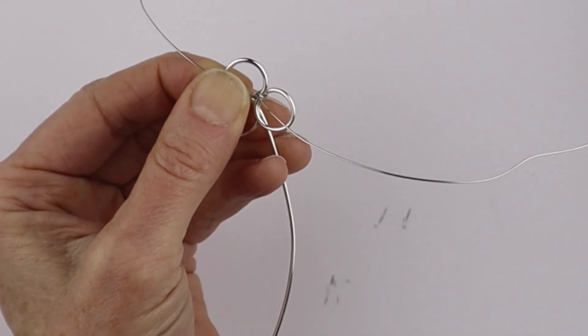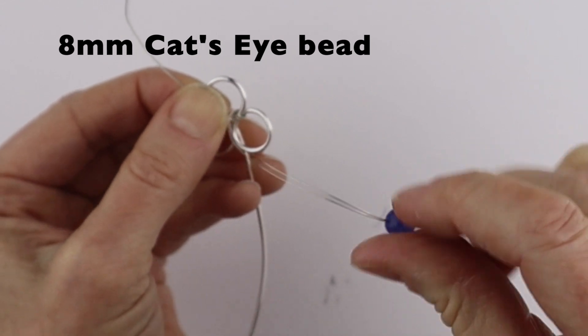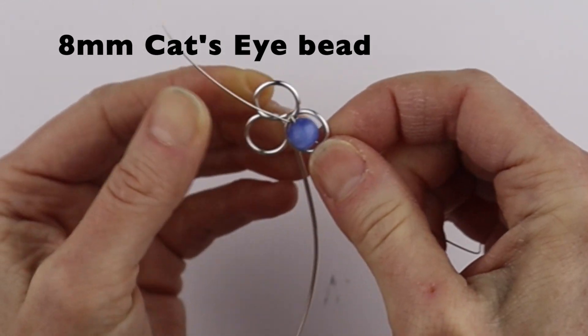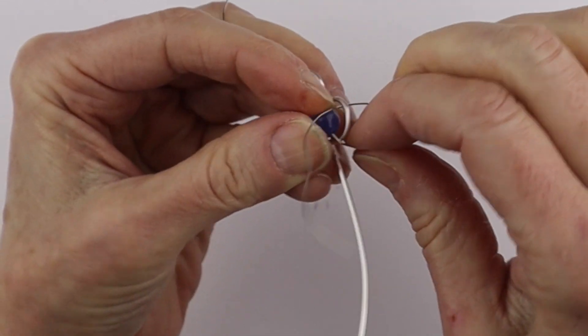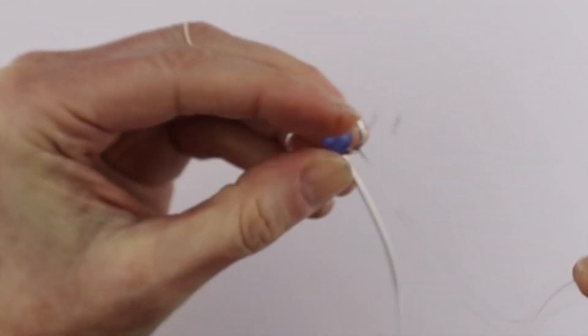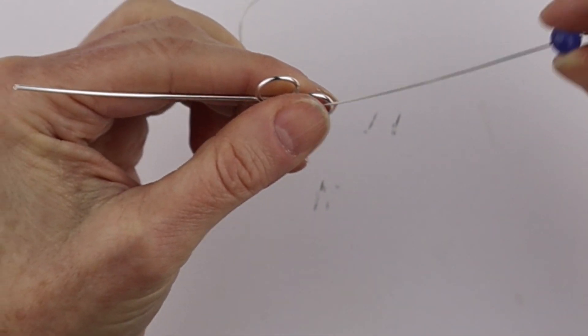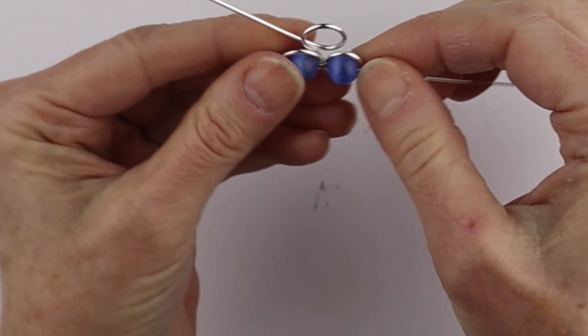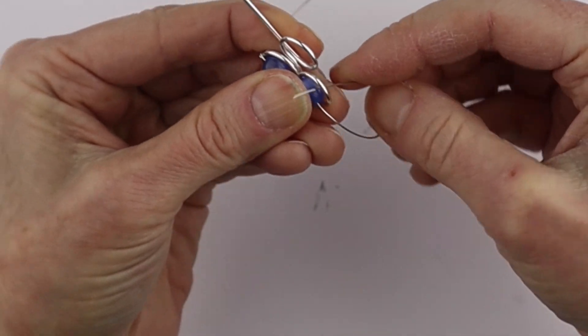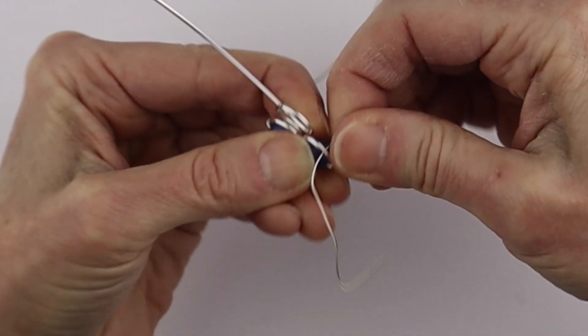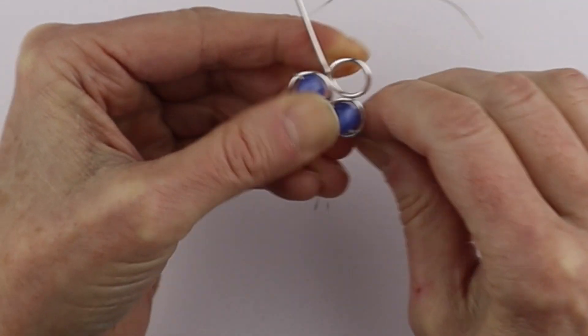And then we're going to take our eight millimeter bead, just stick it in there, bring it over to this side and loop it a couple of times. Just bring that one in here and then we'll put one over here. And we'll wind it a couple of times just so it stays nice and firmly in place.